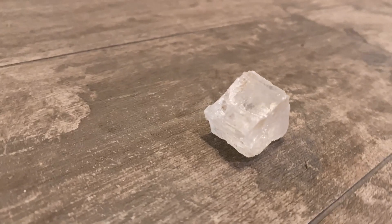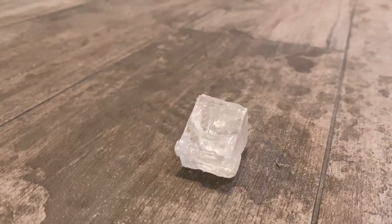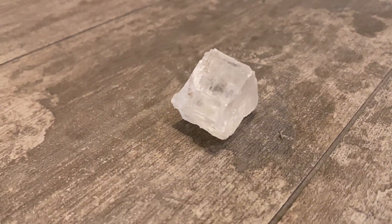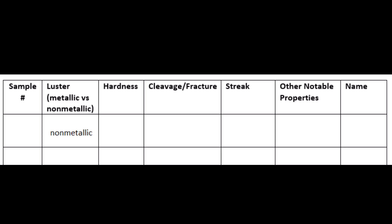It's important to note that other lab manuals might have different flowcharts, and the one I'm using is quite simplified, but they'll all work pretty much the same way. First, we look to see if the mineral is metallic or not. This particular mineral does not look like metal, so it is non-metallic.